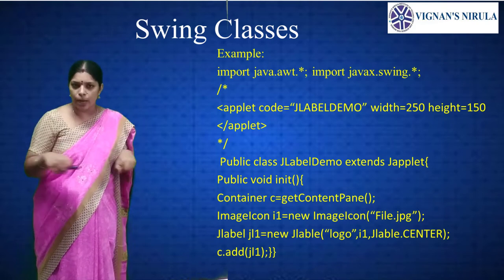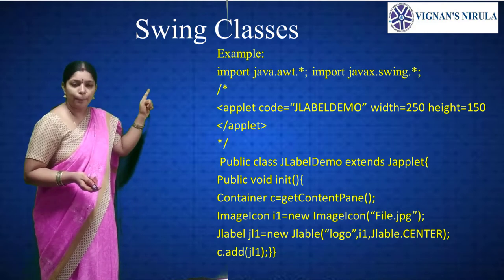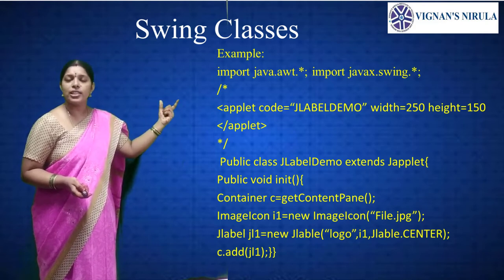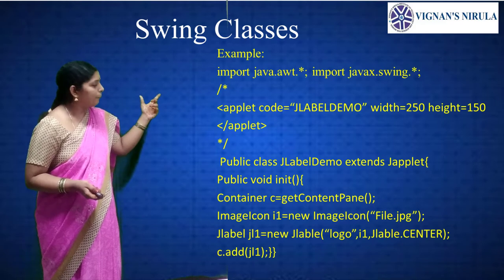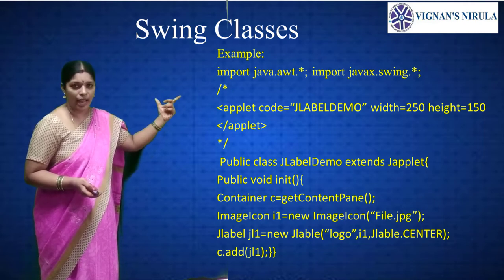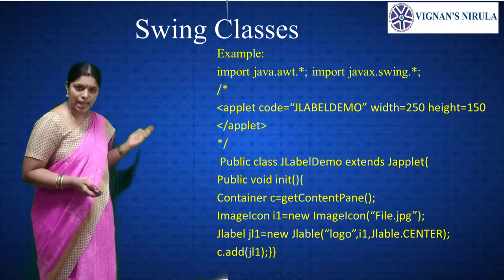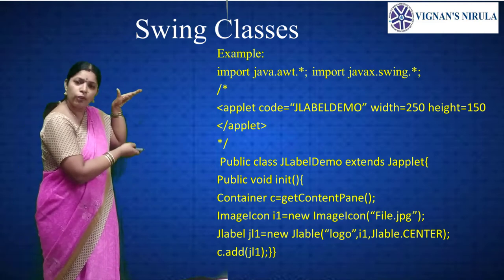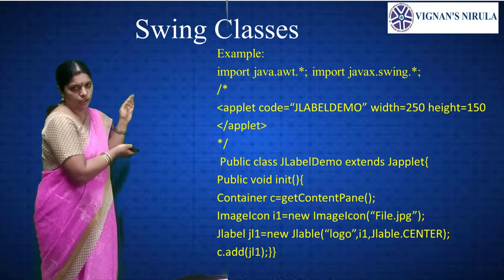Swings are used to create window-based applications. To create the window, we write a small applet code comment: /* <applet code="JLabelDemo" width=250 height=150> </applet> */. The code attribute defines the class name. Here I am creating the JLabelDemo class with width 250 and height 150. The import statements and applet code are mandatory for every swing program.